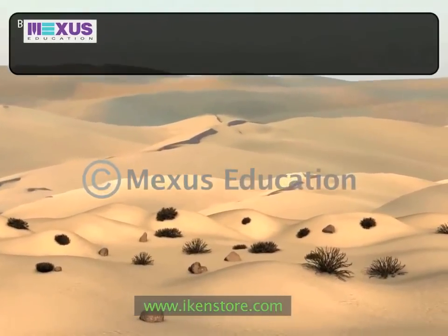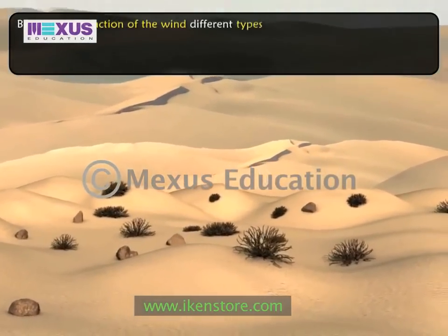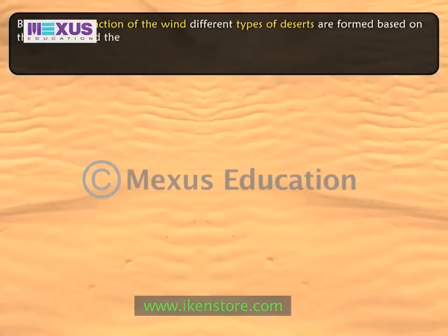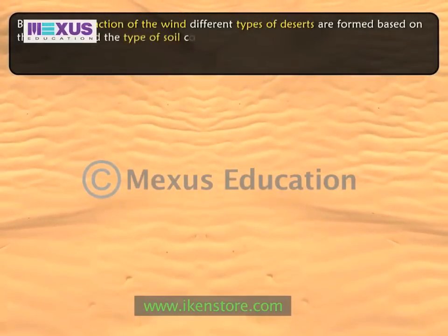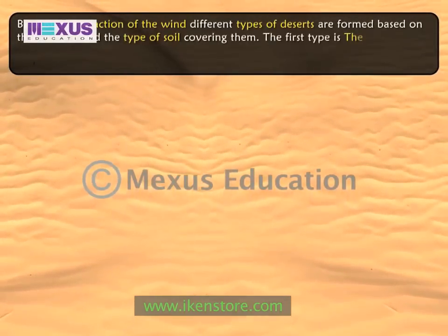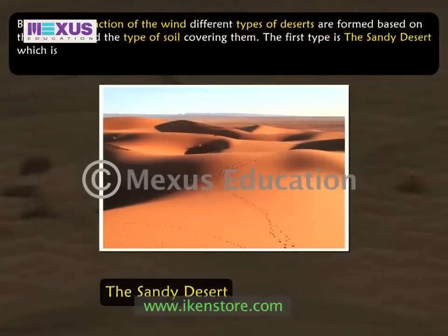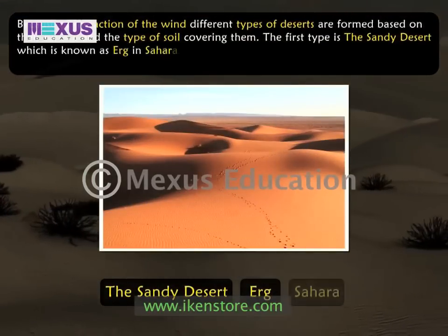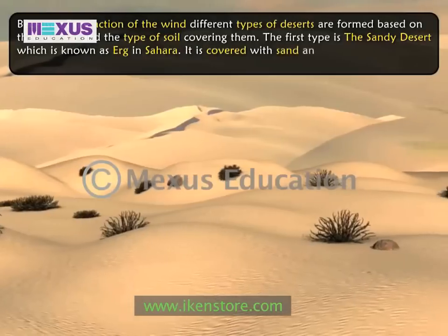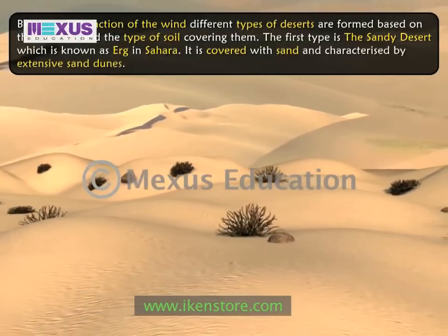Because of the action of the wind, different types of deserts are formed based on their surface and the type of soil covering them. The first type of desert is called the Sandy Desert, which is also known as the Erg in the Sahara. It is covered with sand and characterized by extensive sand dunes.